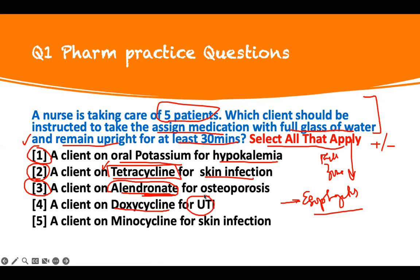Doxycycline for UTI — same thing, in the cycline family. Remain upright, full glass of water, upright for 30 minutes. Minocycline — another medication in the cycline group — upright for 30 minutes with a full glass of water. Be familiar with all these medications and this teaching: 30 minutes upright, full glass of water, to prevent esophagitis.